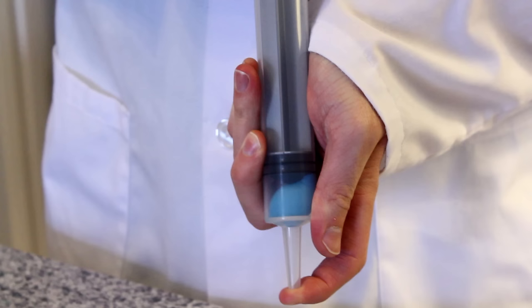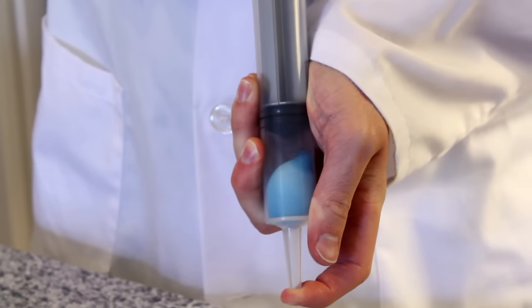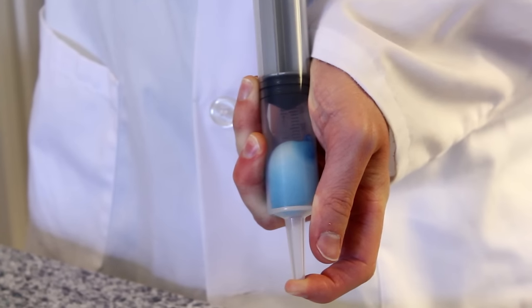Once again, place your finger over the opening in the bottom of the syringe, and pull the plunger upwards. Watch as the balloon increases in size.